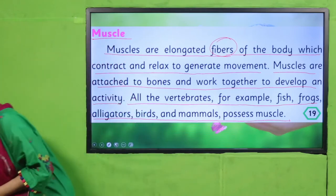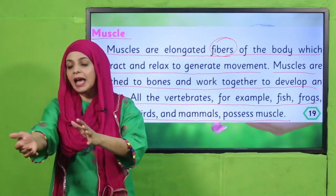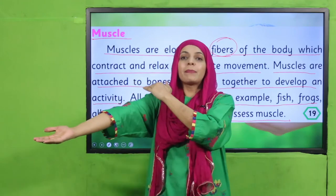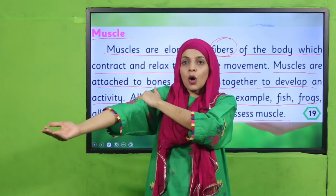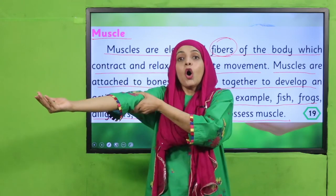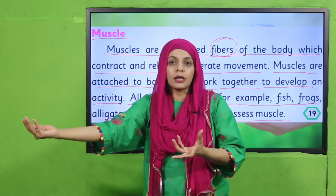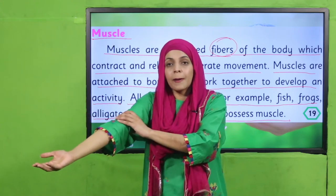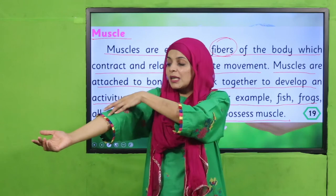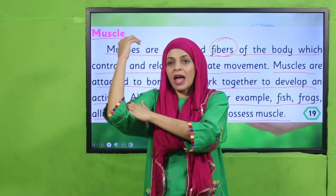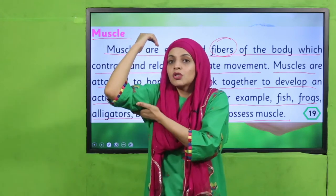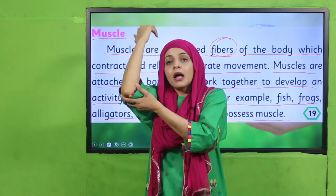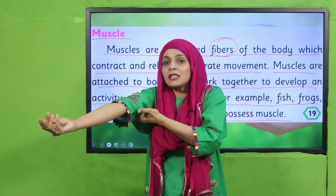Let's do an activity with your arm. We will talk about the upper and lower muscles of your arm — these two muscles work together. If I want to bend my arm, the muscles are attached to the bone from both above and below. When the upper muscle contracts, it shortens; the muscle underneath relaxes, and this is how it helps my arm to bend.